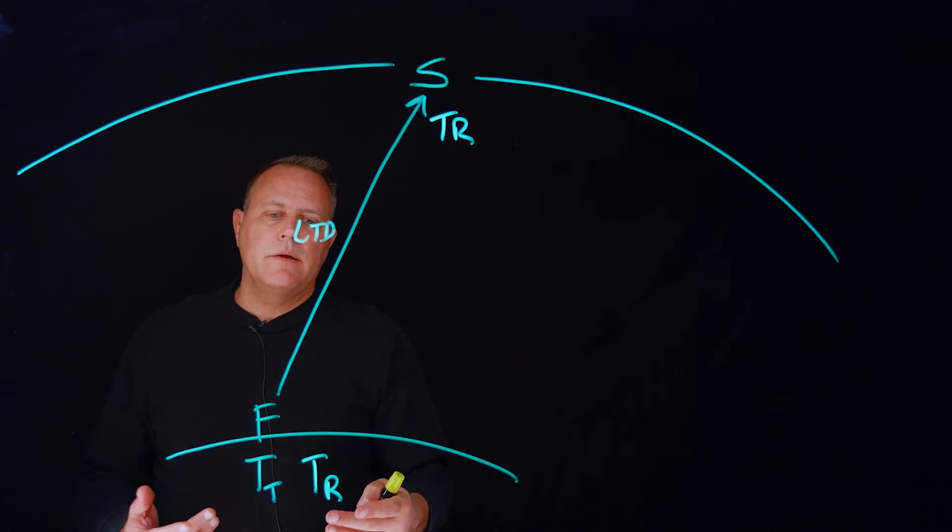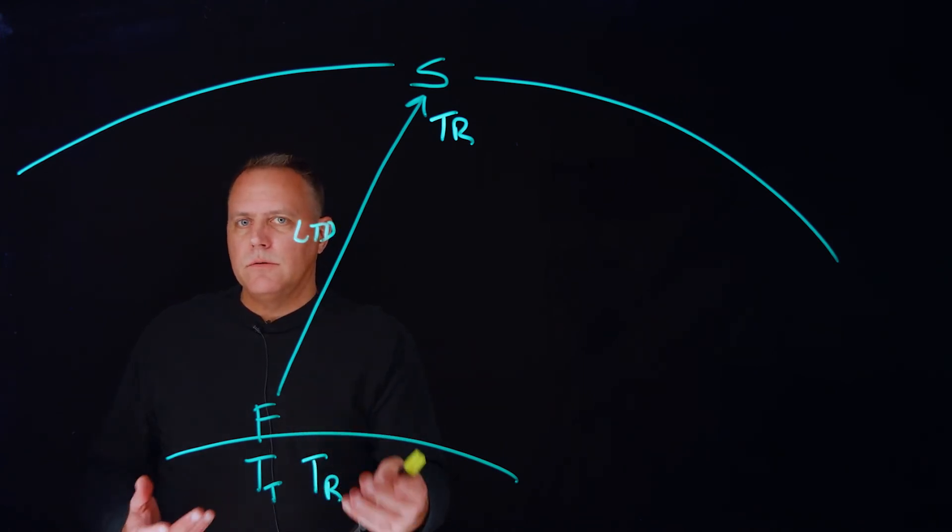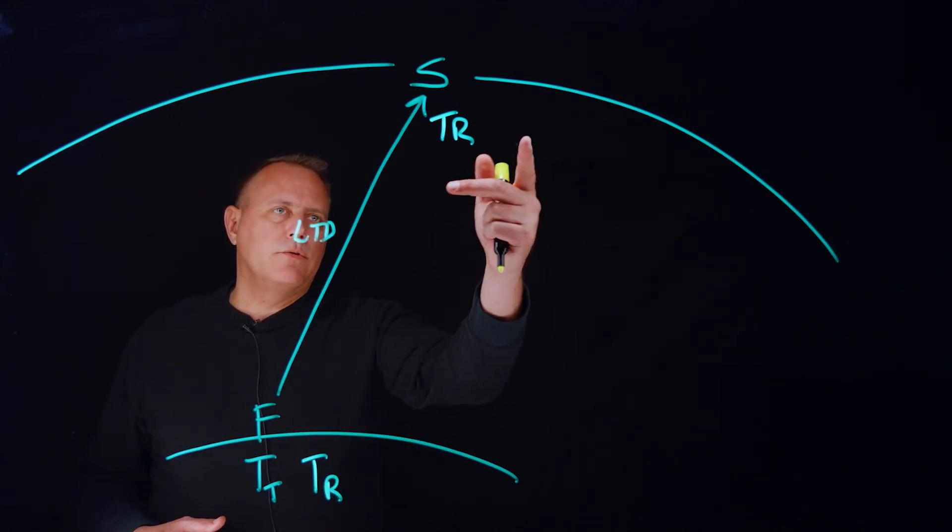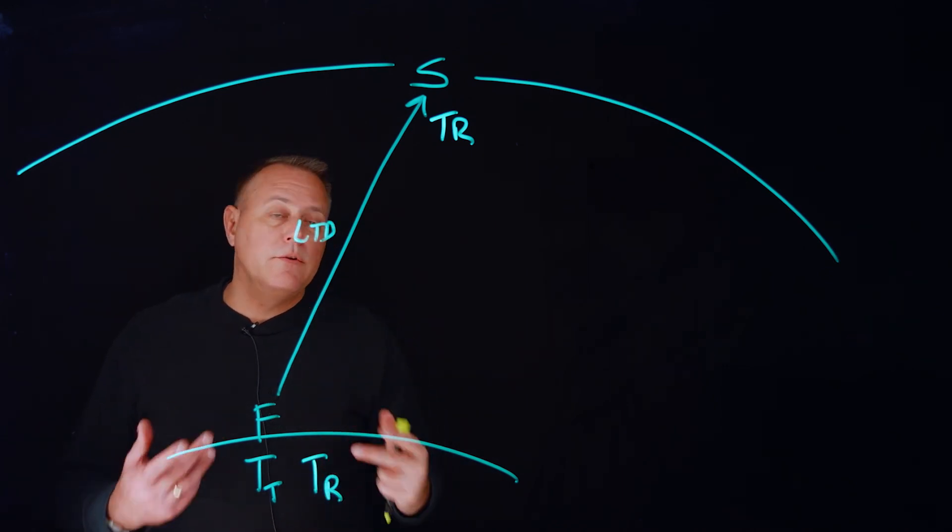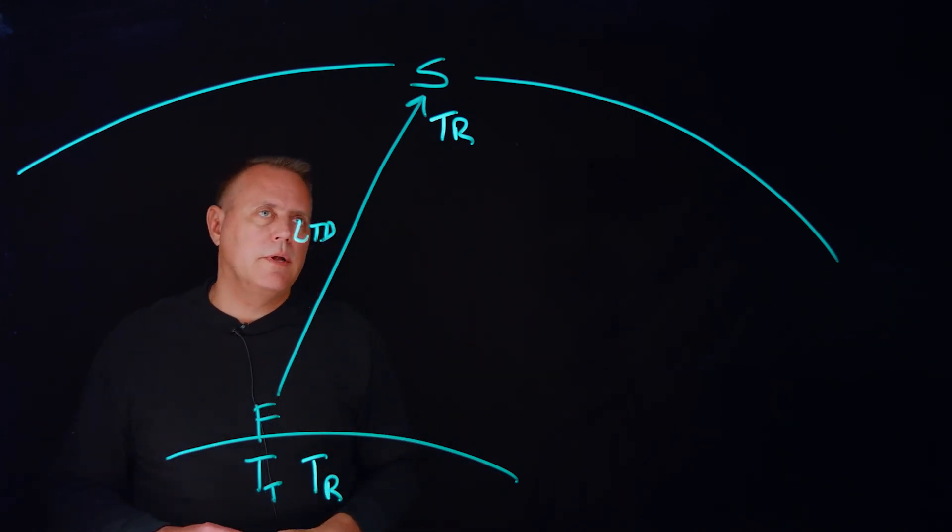So we have to know the direction. We have to know who's hosting the clock. Typically, the from object is hosting the clock, but you may have to switch the logic and ask the question, is the receive object or the to object hosting the clock?